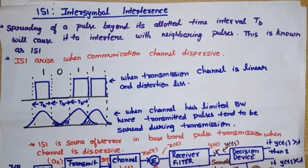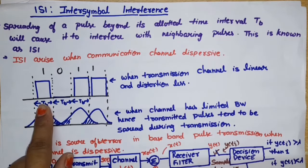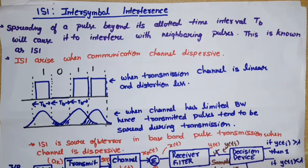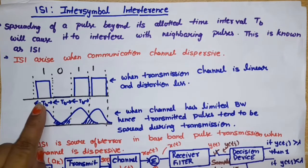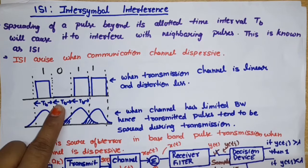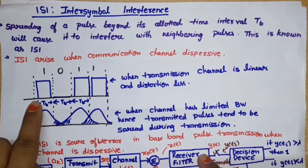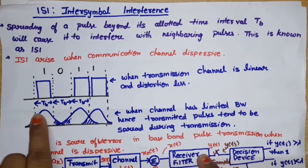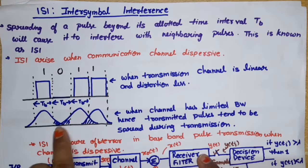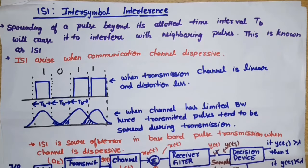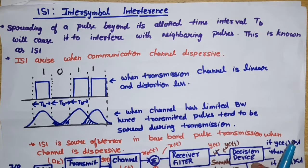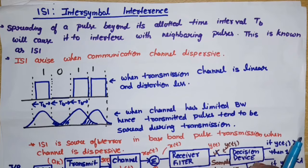Let's understand this with a diagram. Suppose we want to transmit the sequence 1, 0, 1, 1. We encode this using Unipolar Non-Return-to-Zero (NRZ), where one is represented by a high amplitude and zero by DC level (zero amplitude). When transmitted through the channel, the pulse for 'one' — which should occupy duration Tb — spreads beyond Tb. Similarly, the other 'one' pulses spread and overlap each other. This overlapping shaded portion is the interference.